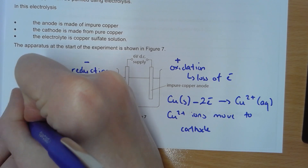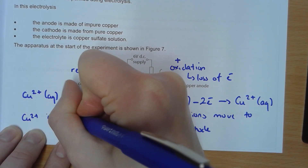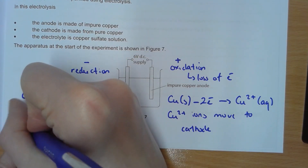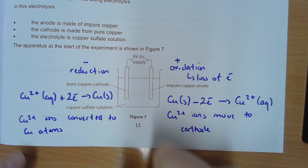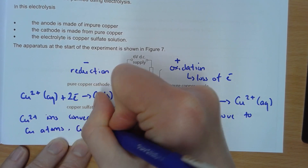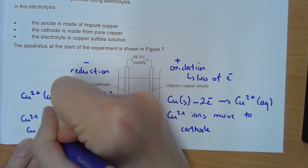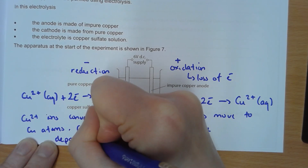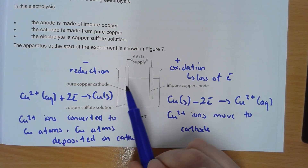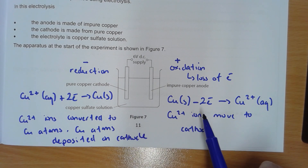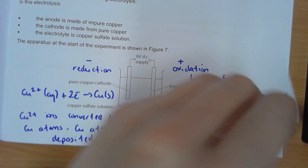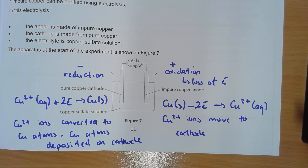Copper atoms deposited on the cathode cause it to increase in size. The anode gets smaller because those Cu²⁺ ions, once formed, move to the cathode. The bulk of your marks comes from knowing those half equations: Cu → Cu²⁺ + 2e⁻ at the anode, and Cu²⁺ + 2e⁻ → Cu at the cathode.